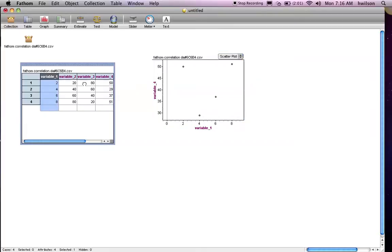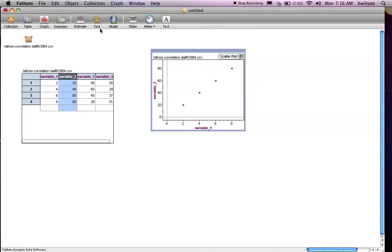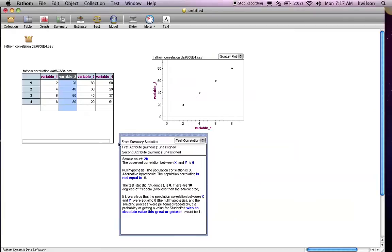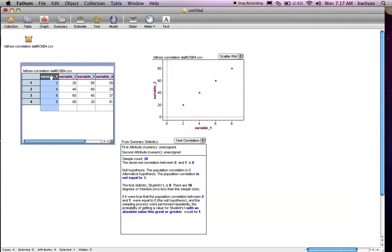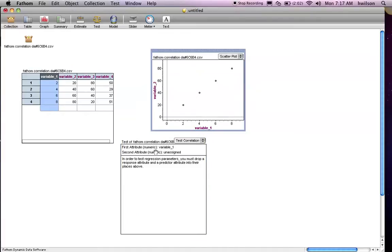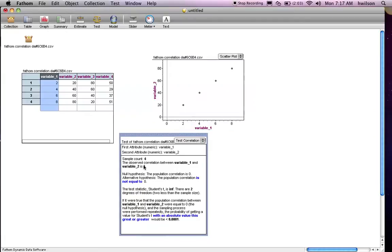But what we can do is actually calculate the correlation. Let's go back to a positive correlation. So to calculate correlation, we go to test. Drag it down here. We're going to select test correlation. And what we're going to do is we're going to drag variables into the test and calculate the correlation. So you can drag from the data table, variable 1. Or you can also grab from the actual graph. So let's select variable 2 and drag it down here. And it has calculated the correlation coefficient, a value of 1.